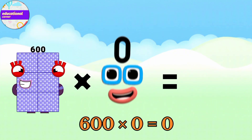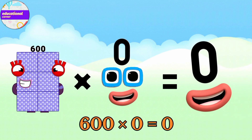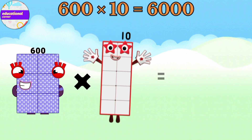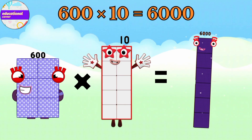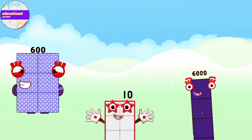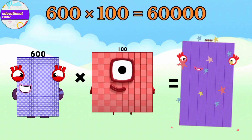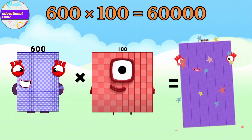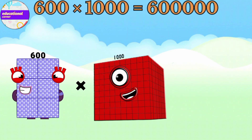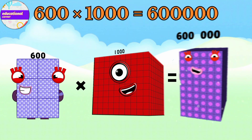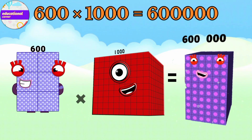500 x 1000 equals 500,000. 600 x 100 equals 600,000. 600 x 1000 equals 600,000.